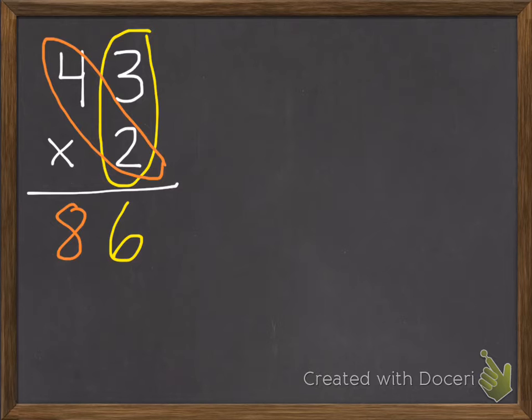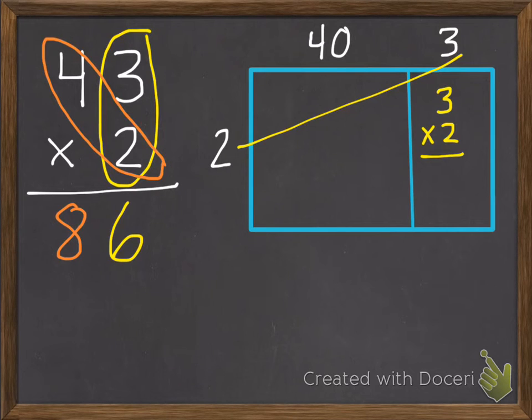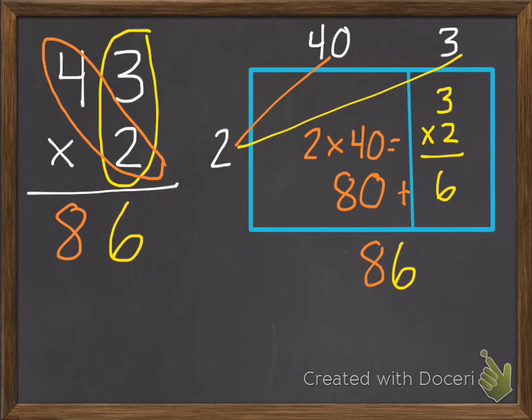And I can check this with an area model. So there's my 43 times 2. 2 times 3, or 3 times 2, equals 6. And then 2 times 40 equals 80. So I add those together, and I get 86. So 8 tens, 6 ones.